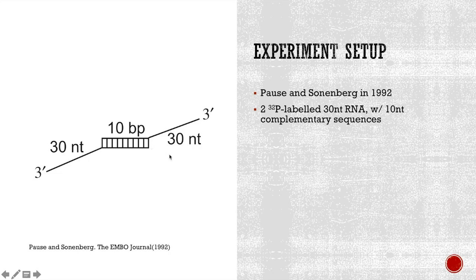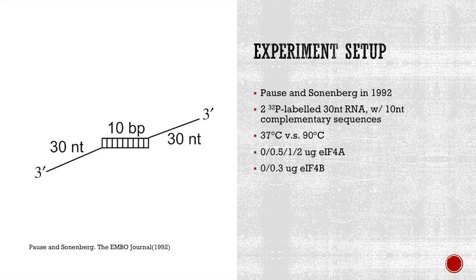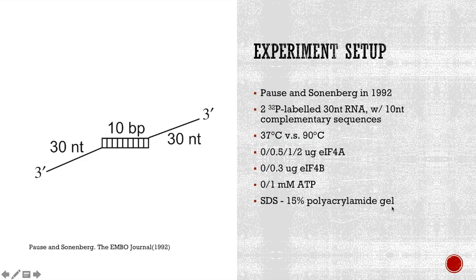These substrates were first placed in different temperature environments, more specifically 37 degrees Celsius or 90 degrees Celsius. Later on, in different sub-experiments, 0 or 0.5 or 1 or 2 micrograms of EIF4A was added, 0 or 0.3 micrograms of EIF4B was then added, and 0 or 1 millimolar of ATP was added. Each mixture was then separated on SDS 15% polyacrylamide gel and visualized under autoradiography.